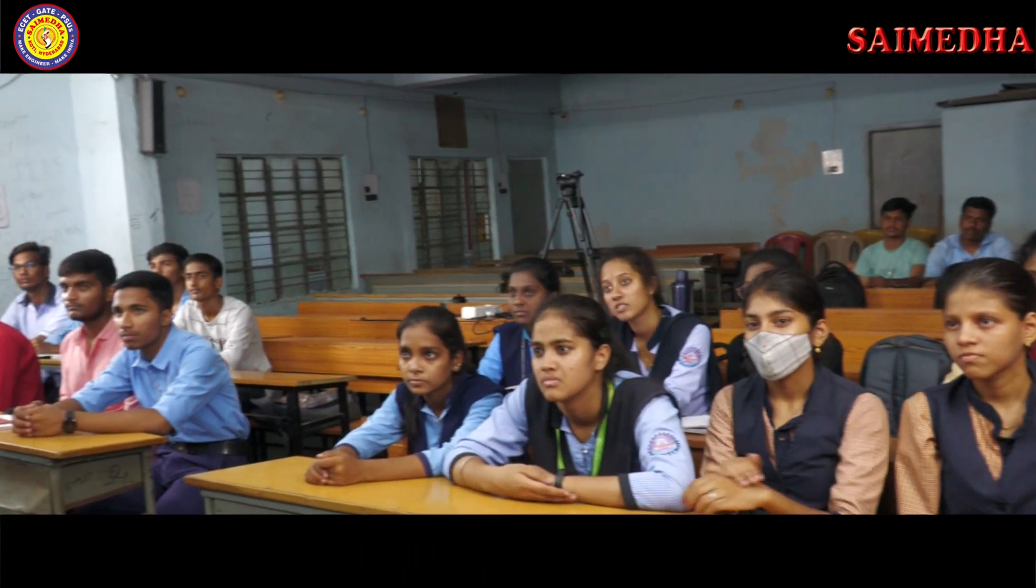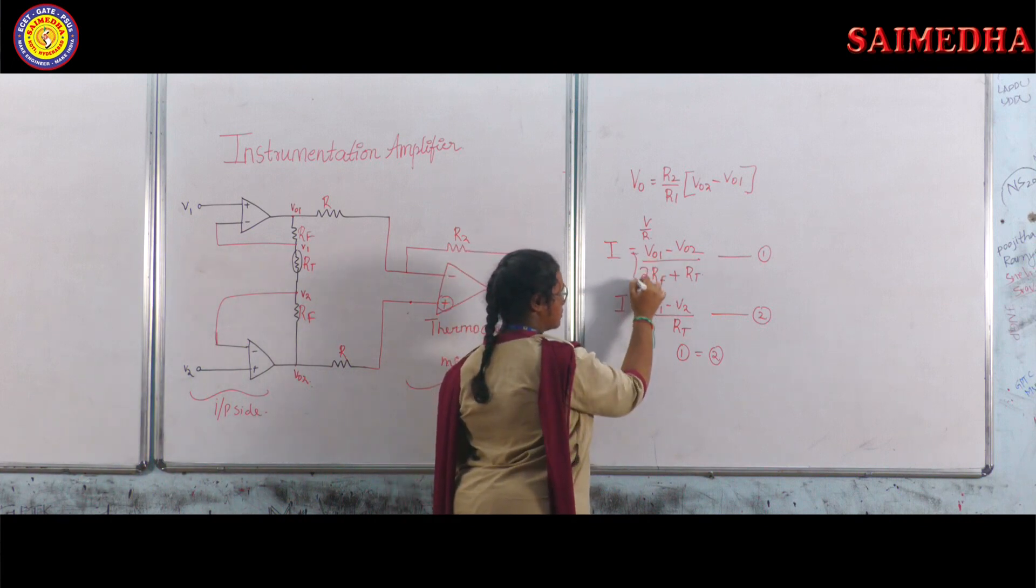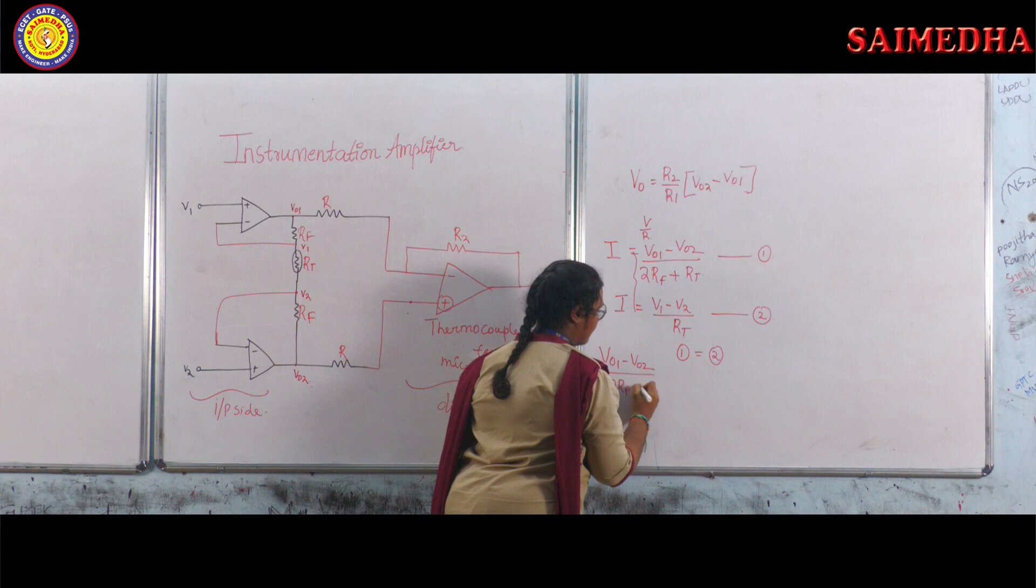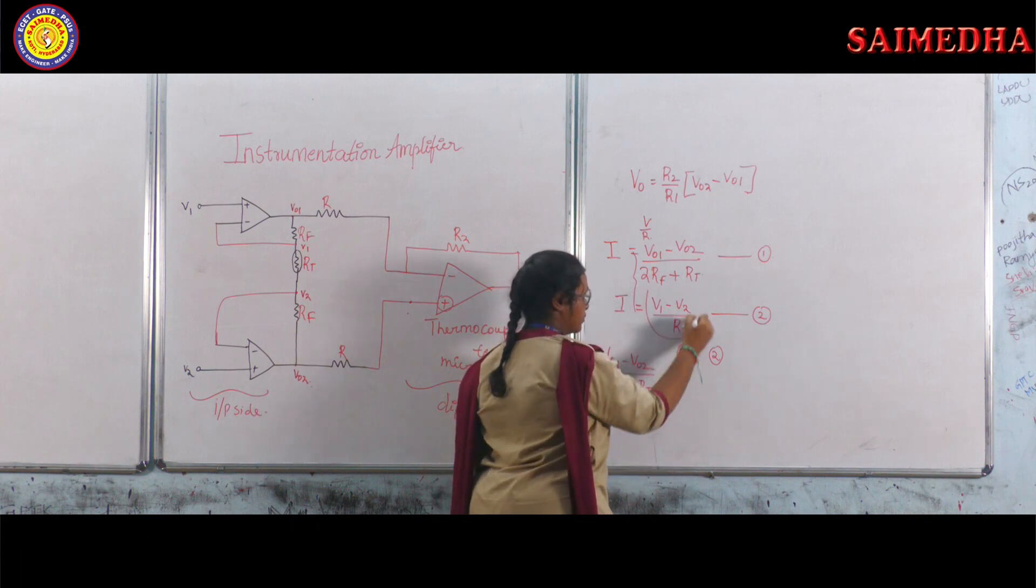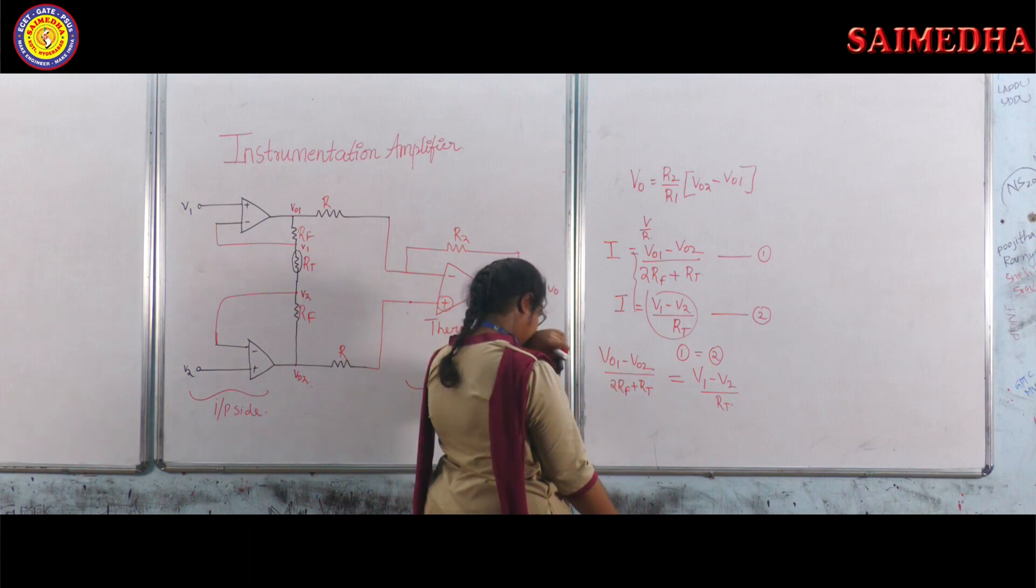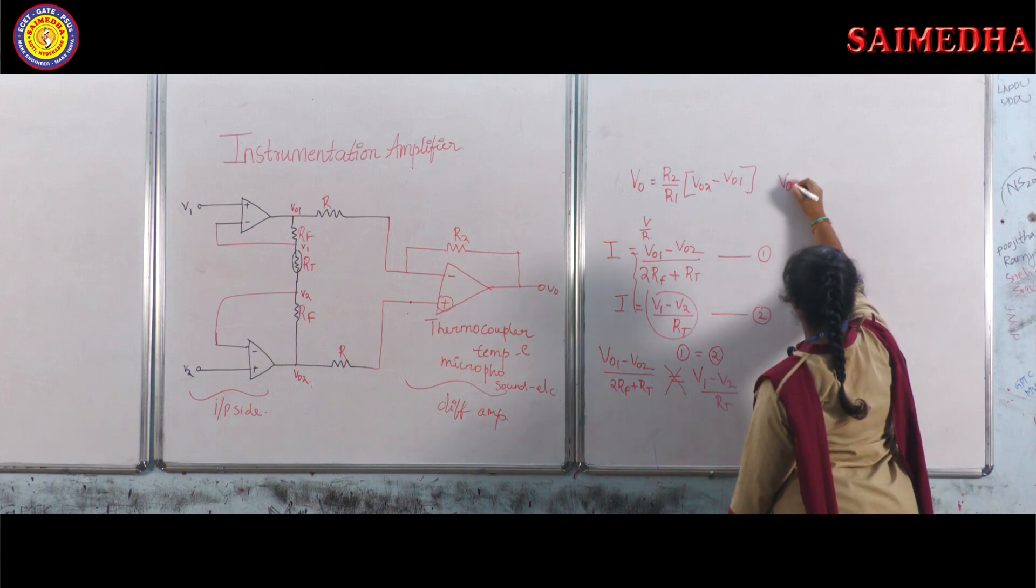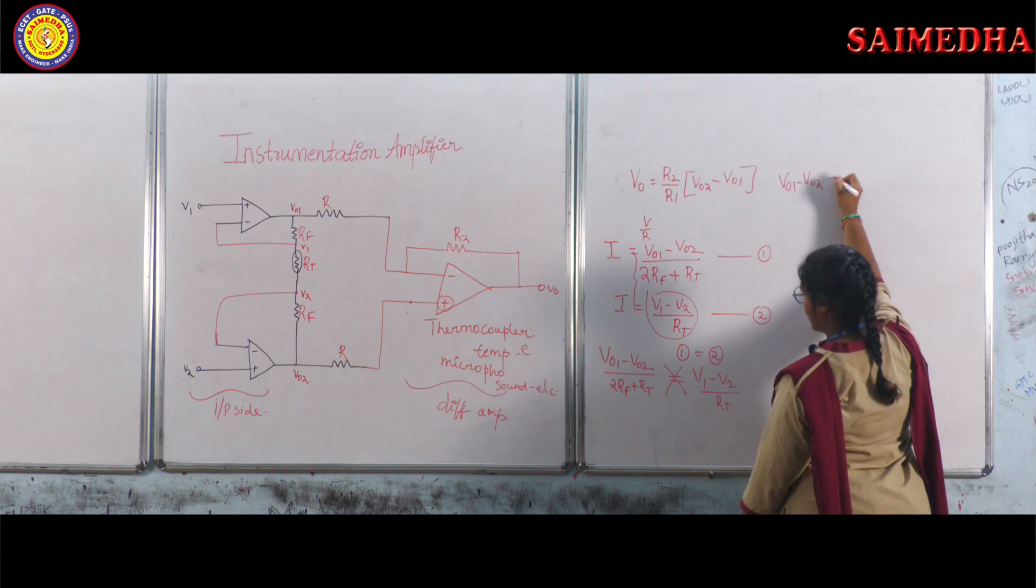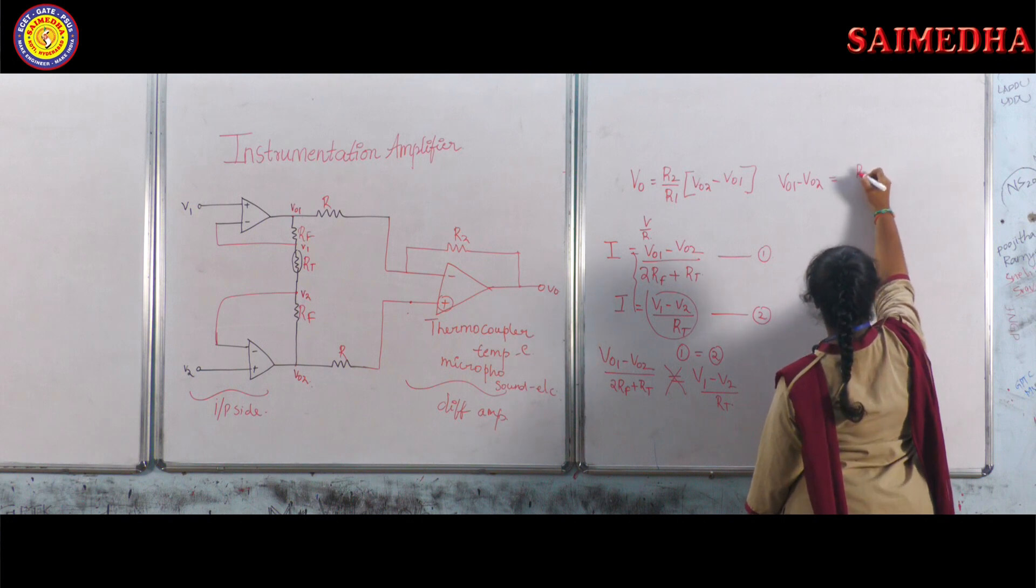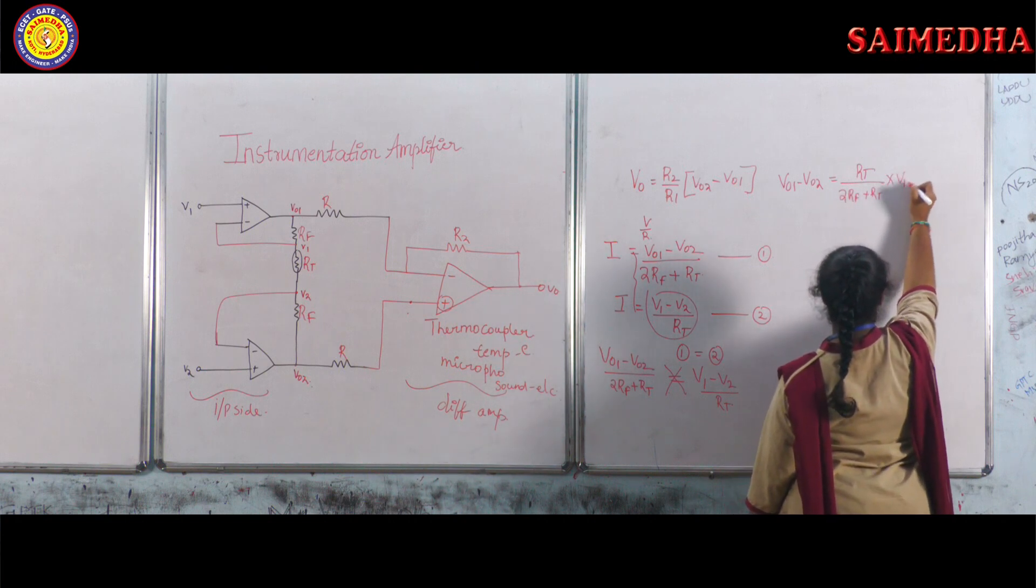Now we will equate these two equations. When we equate these two equations, I and I are similar, so we will equate these two things. That is VO1 minus VO2 by 2RF plus RT equals V1 minus V2 by RT. Here we will cross multiply this, so we will be getting VO1 minus VO2 equals RT by 2RF plus RT into V1 minus V2.